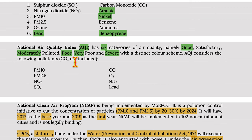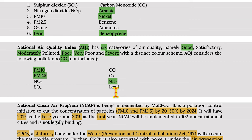The AQI considers the following pollutants — CO₂ is again not included. It includes PM10, PM2.5, NO₂, SO₂, CO, O₃, NH₃, and lead.